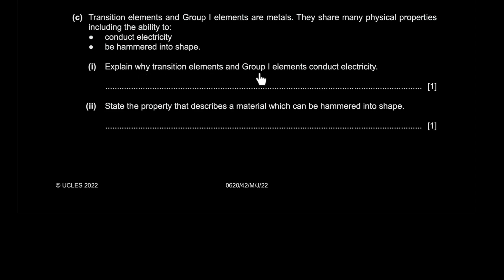Transition elements and group 1 elements are metals. Good to know. Explain why transition elements and group 1 elements conduct electricity. There are two reasons anything can conduct electricity. Either because of free-moving electrons or free-moving ions. Over here in a solid, well, you won't have free-moving ions. Free-moving electrons is the reason.